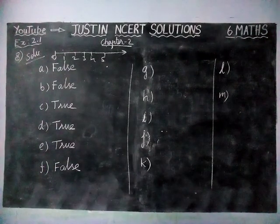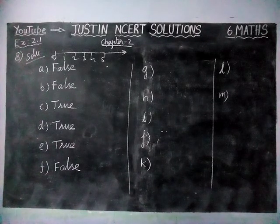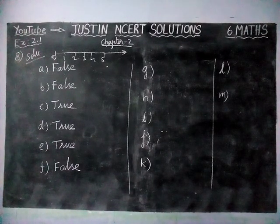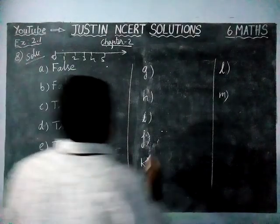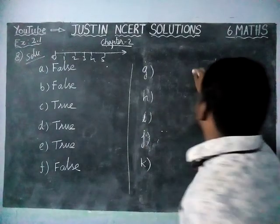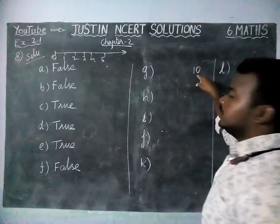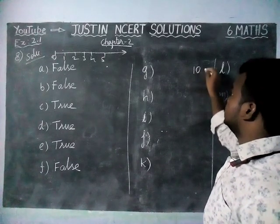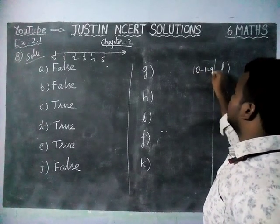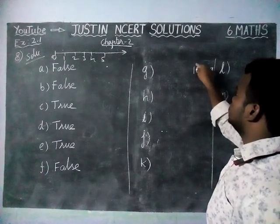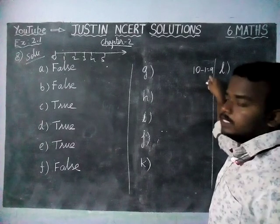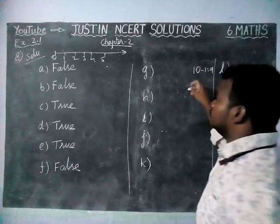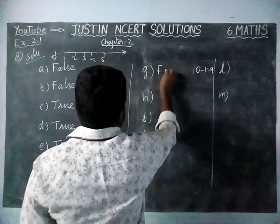Next, option G: 'The predecessor of a 2-digit number is never a single digit number.' We can check: 10 is a 2-digit number, and its predecessor is 9, which is a single digit. Therefore, this statement is false.